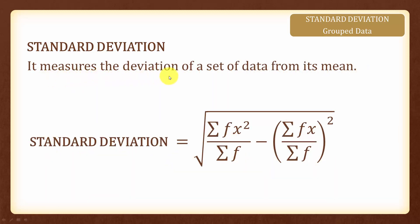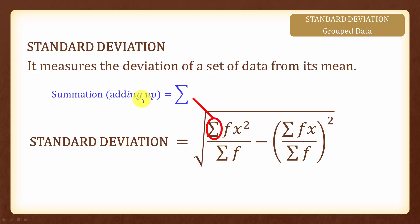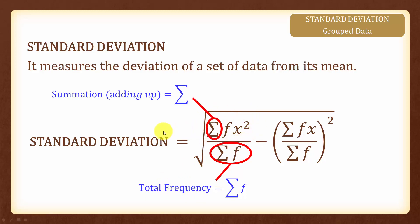Standard deviation is the measure of the deviation of a set of data from its mean, and the formula is given by this. The sigma symbol represents summation, which means the adding up of values. The summation of f means we add up all the frequencies to get the total frequency. The summation of fx squared means we multiply each value of x squared with its frequency and add them all up. This is somewhat similar to how you find the numerator for the mean.